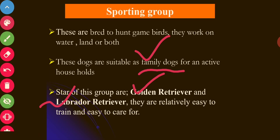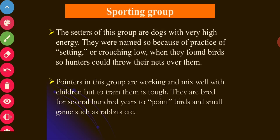Golden Retrievers and Labrador Retrievers are relatively easy to train and care for. Another animal in this group is the Setter. Setters are very energetic, high-energy dogs. They are named 'setter' because of their practice of setting or crouching low when they find a bird in the field, so that a hunter could throw a net over them.